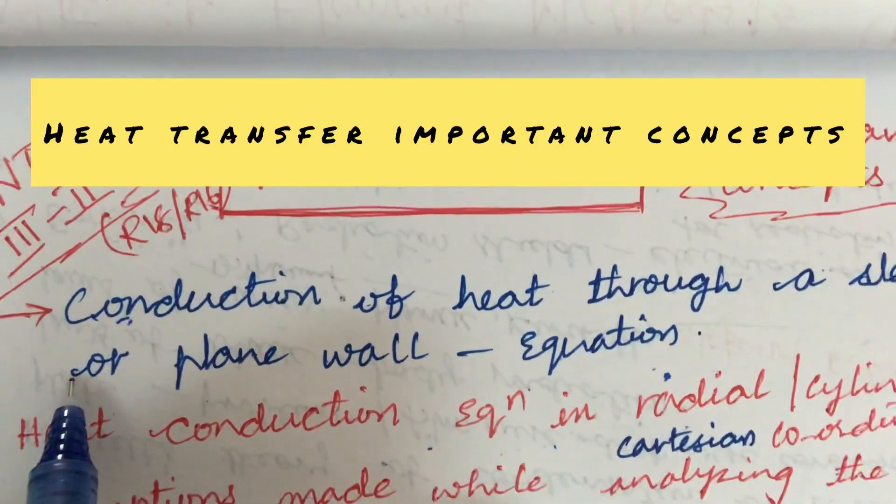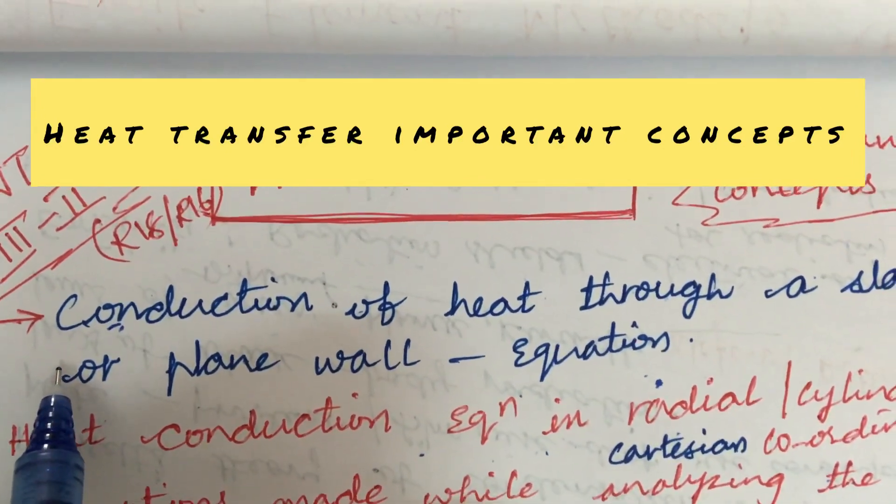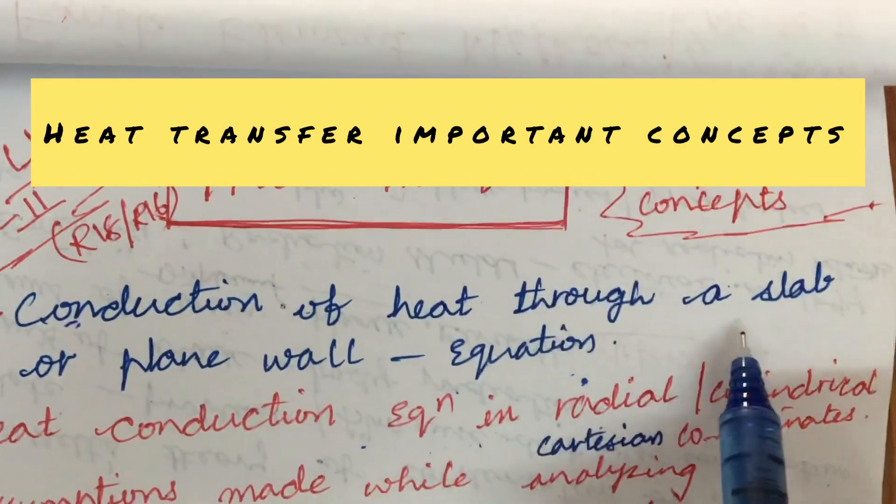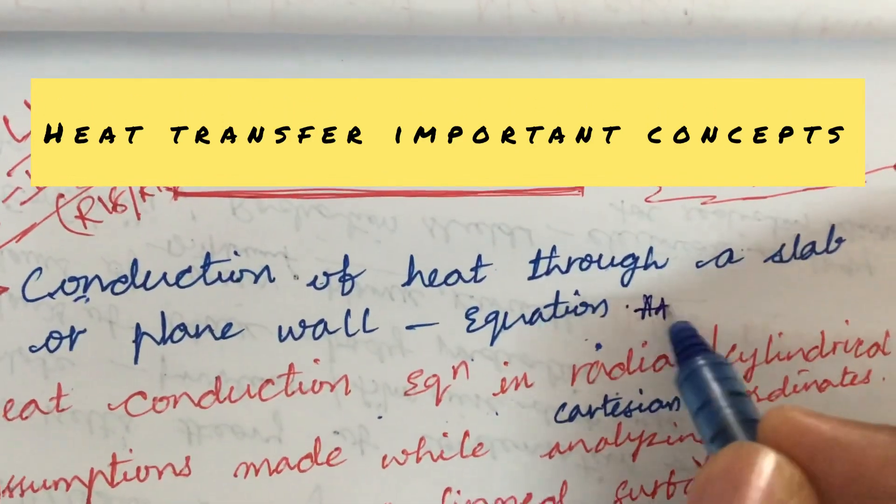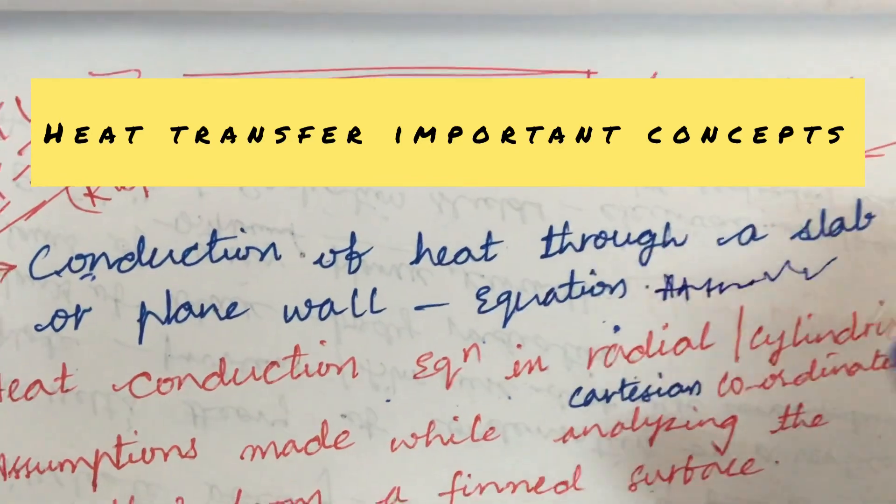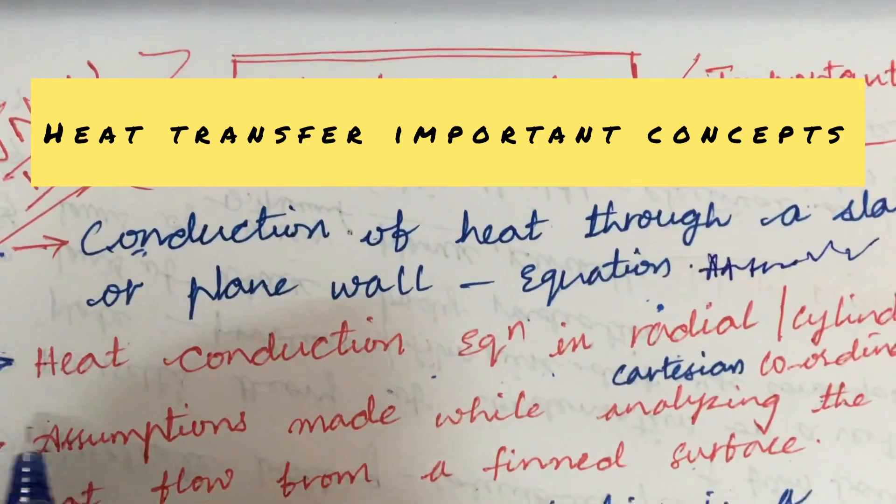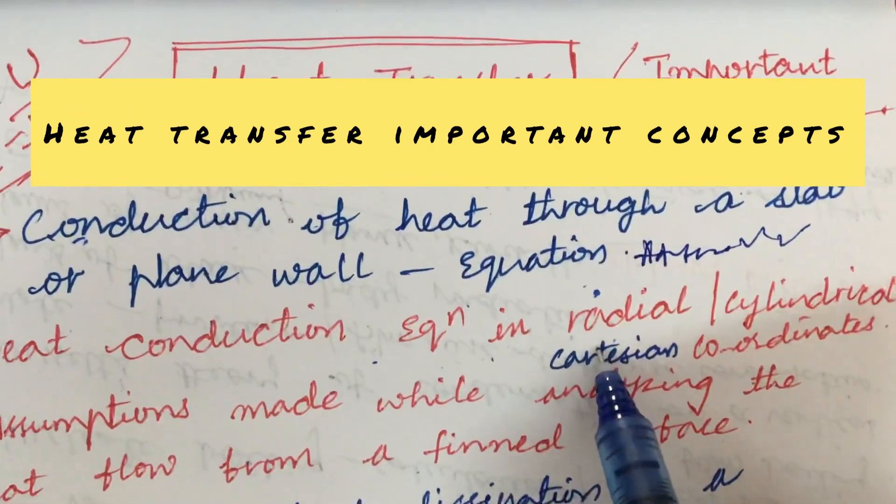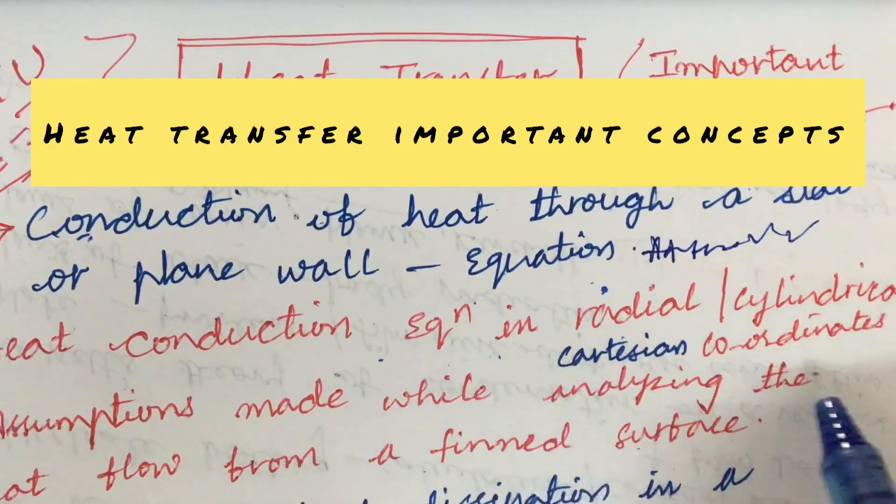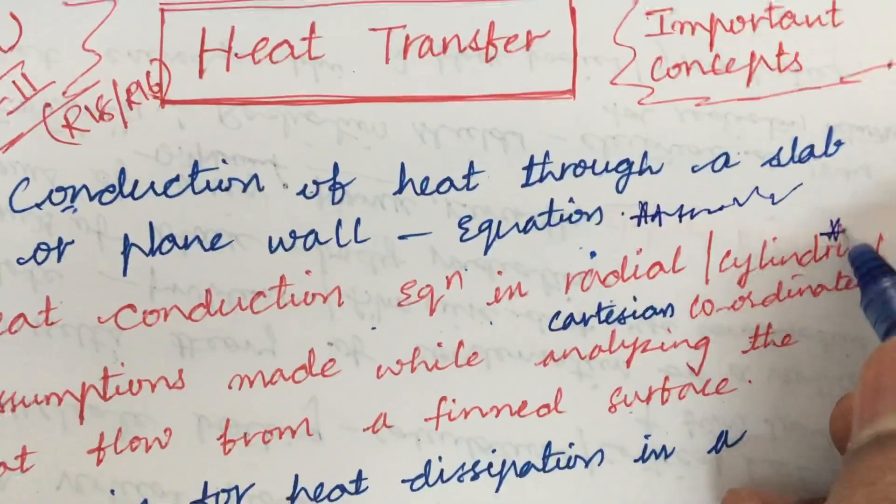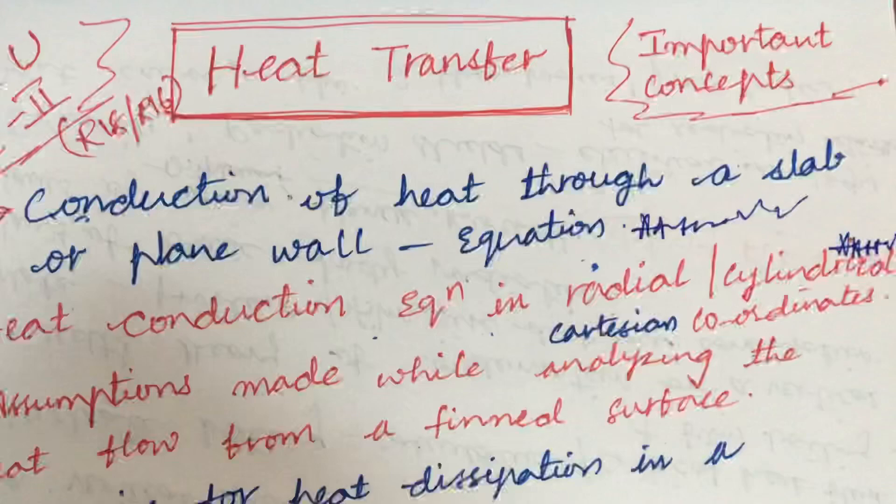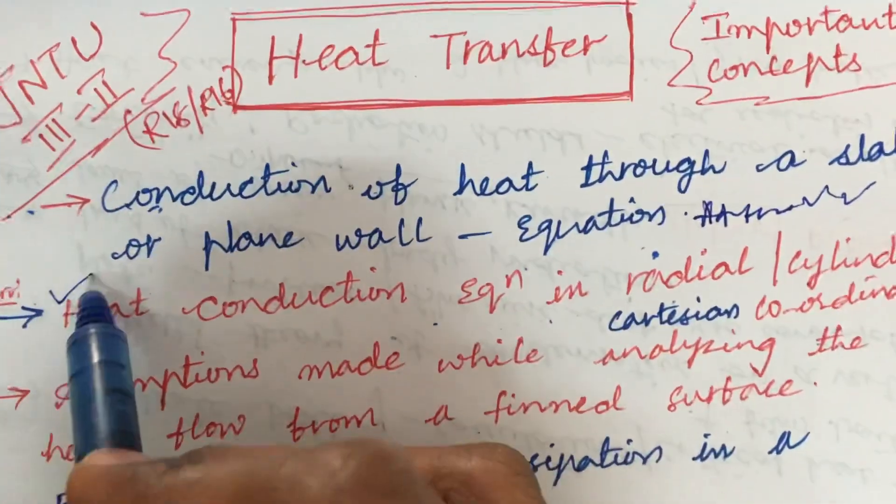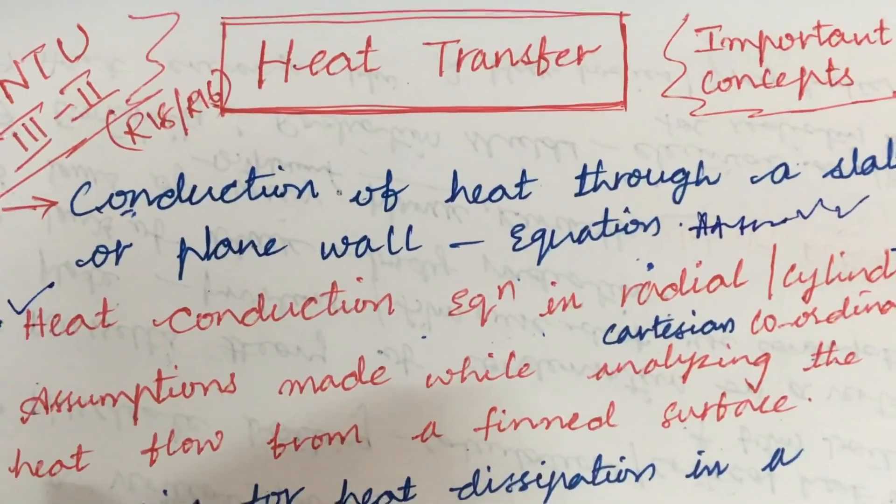The first and foremost gunshot question is the conduction of heat through a slab or a plane wall. Later, the heat conduction equation in radial as well as cylindrical or Cartesian coordinates, out of these three any one will be asked for sure. This is also one of the gunshot questions and you need to derive a derivation for that.